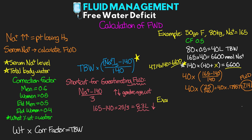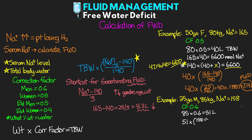Let's do one more example. Let's say we have a 25-year-old male who weighs 85 kilograms with a serum sodium of 158. Go ahead and pause the lesson here, try to calculate what the free water deficit is going to be for this gentleman, and then leave your answer down in the comments. Alright, let's go ahead and calculate this one out. His correction factor is going to be 0.6, so we take his weight — 85 times 0.6 — which gives us 51 liters. Now we take 51, multiply that by (158 minus 140) divided by 140, and we get approximately 6.6 liters of free water deficit.